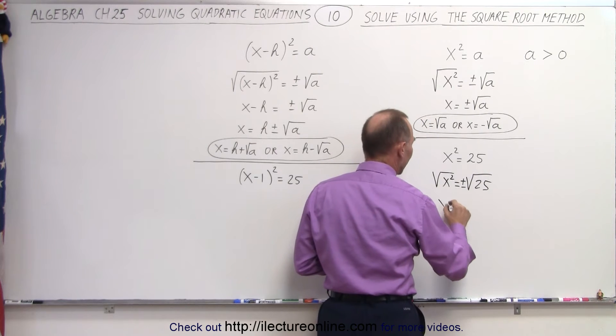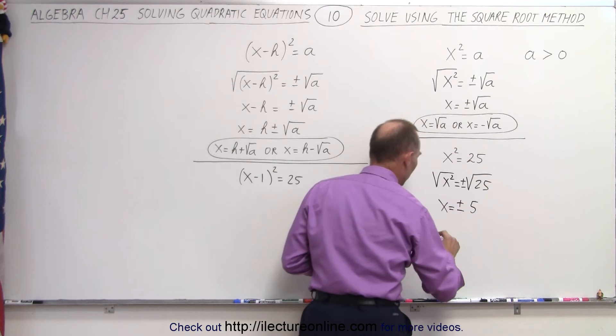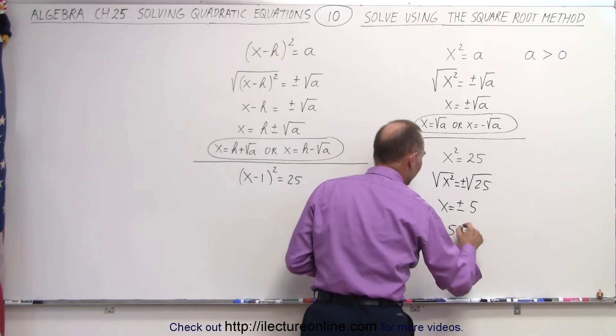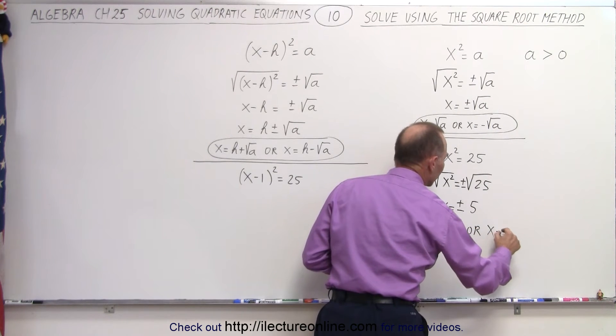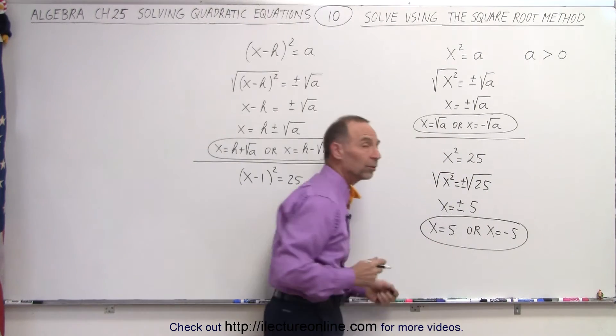So that means that x equals the plus and minus square root of 25, which is equal to 5, which means that x equals positive 5 or x equals negative 5, which are the two real solutions to that quadratic equation.